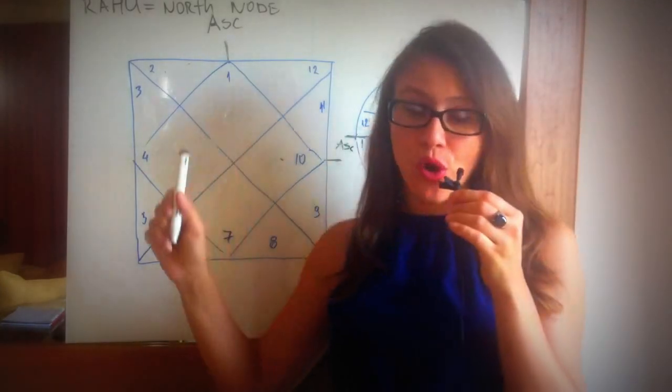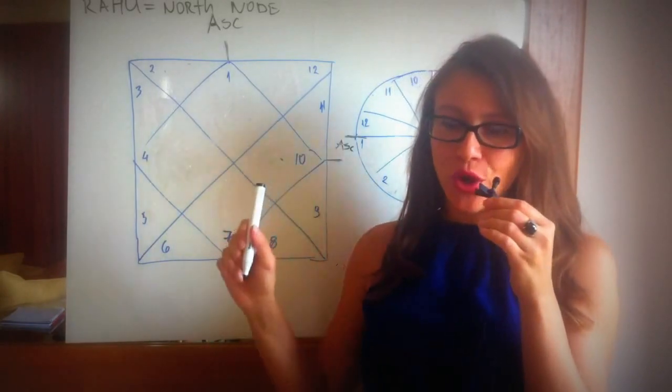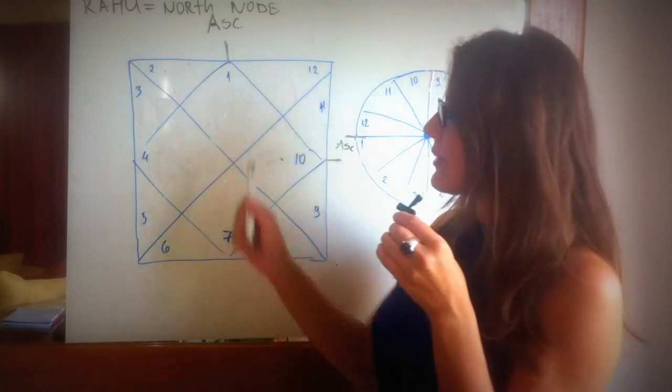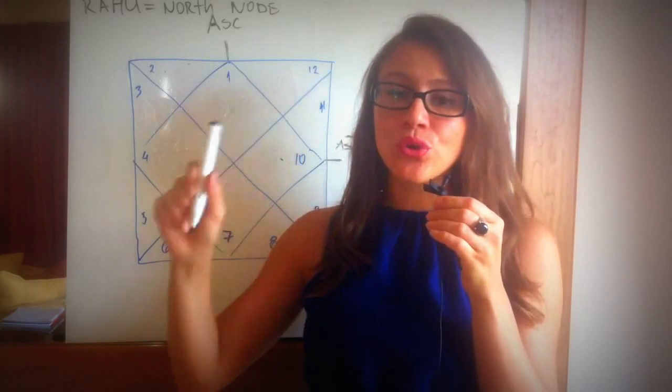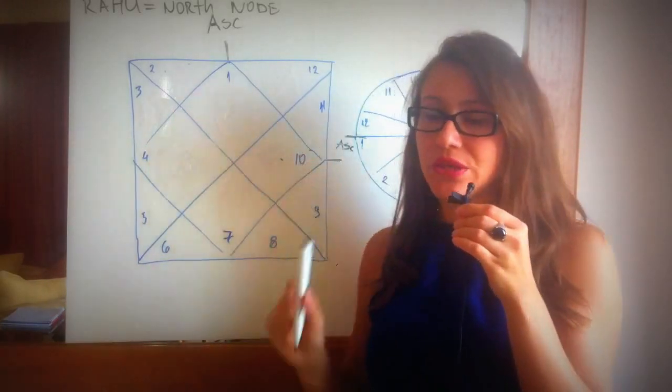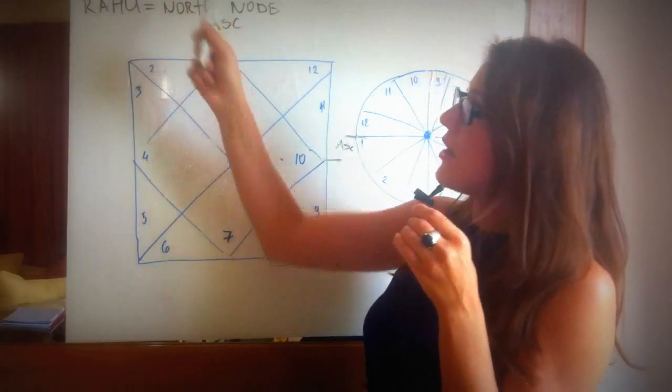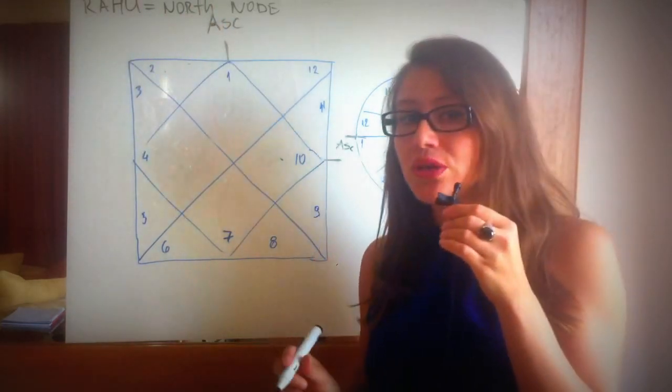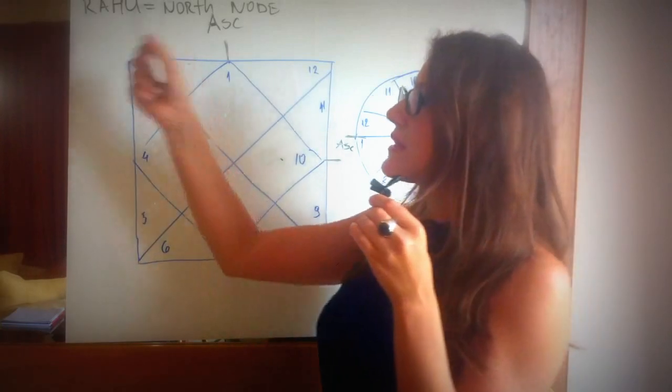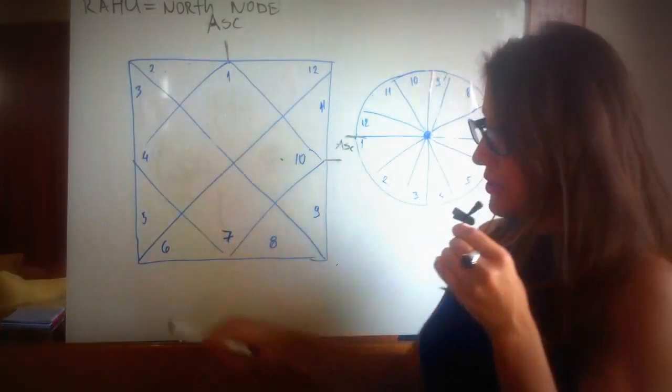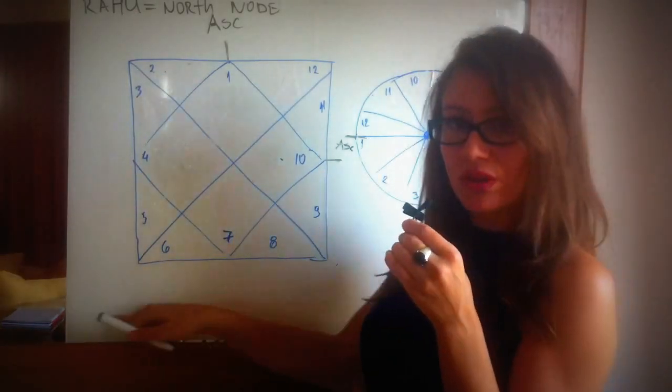And what I want you to do is I want you to go to my website, astrolada.com, go to my birth chart calculator, and I want you to, if you know your time of birth, enter it correctly, then you'll be able to see the house positions of Ketu and Rahu, the south node and the north node.